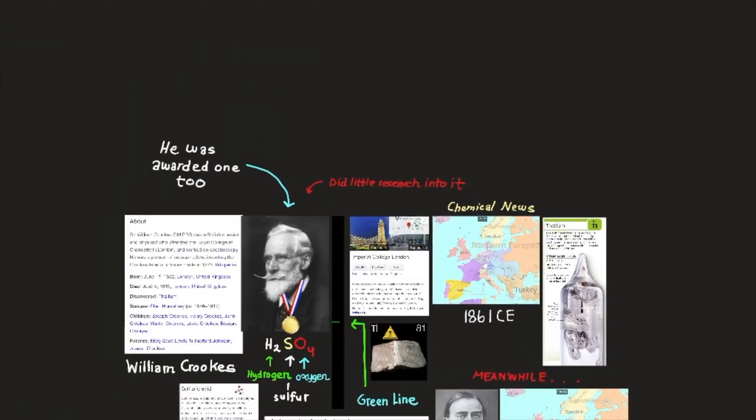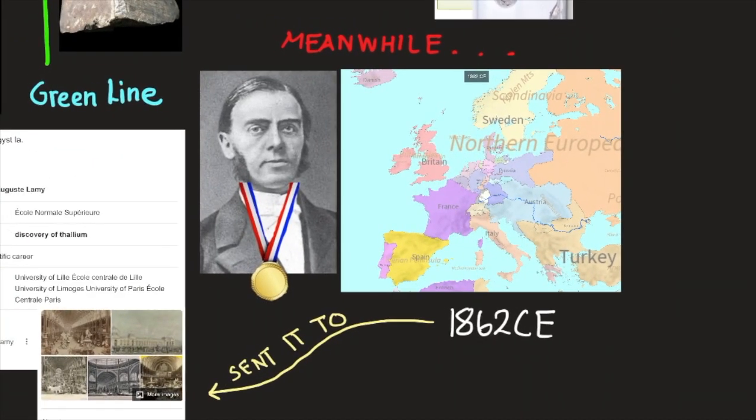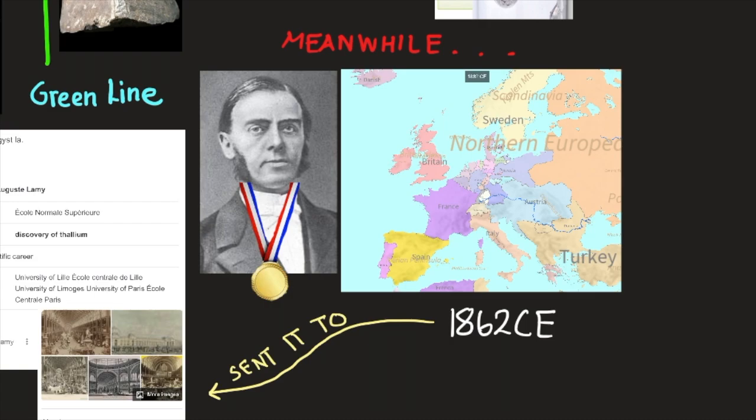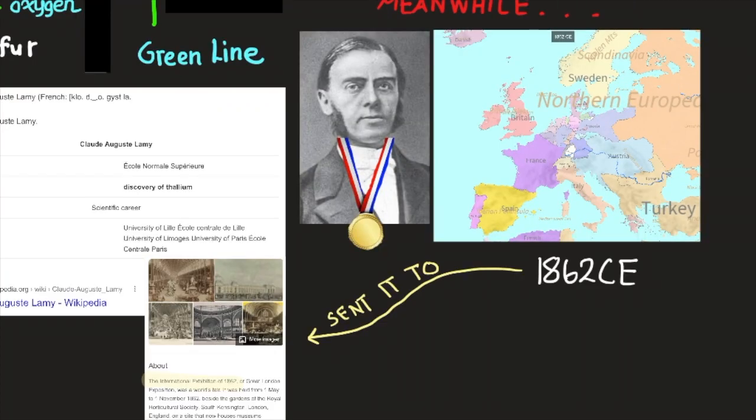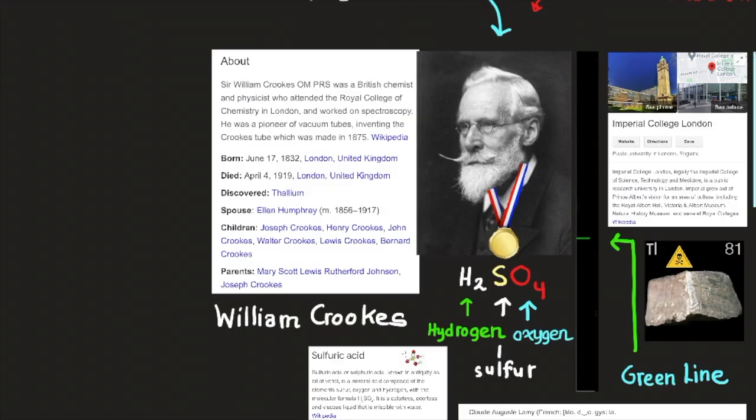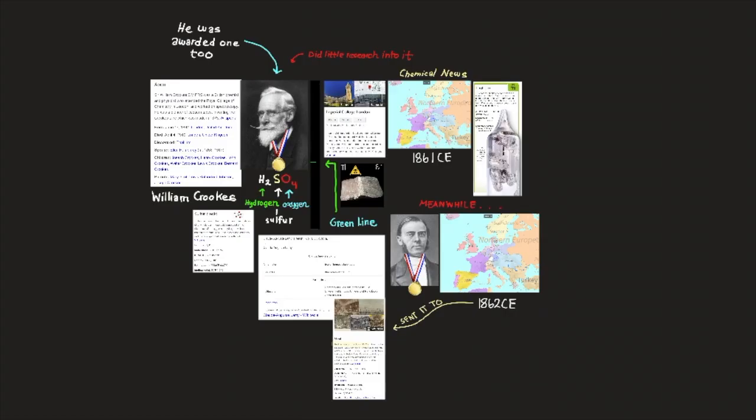He announced his discovery in March 1861 in chemical news. However, he did very little research into it. Meanwhile, in 1862, Claude Auguste Lamy of Lille, France, began to research thallium more thoroughly and even cast a small ingot of the metal itself. The French Academy now credited him its discovery. He sent the ingot to the London International Exhibit in 1862, where it was acclaimed as a new metal and he was awarded a medal. Crookes was furious, so the exhibition committee awarded him a medal as well.